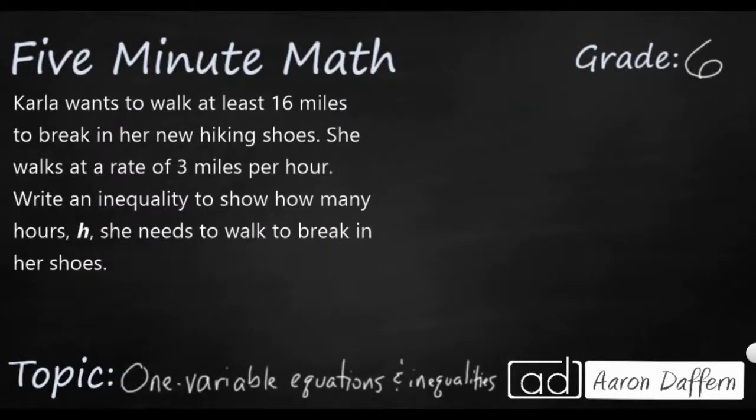So here's our next problem. Carla wants to walk at least 16 miles to break in her new hiking shoes. And she walks at a rate of three miles per hour. We need to write an inequality. So that's going to be using a greater than or a less than sign to show how many hours H she needs to walk to break in her shoes.